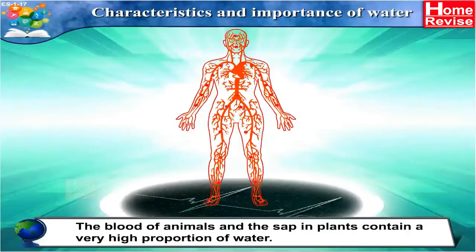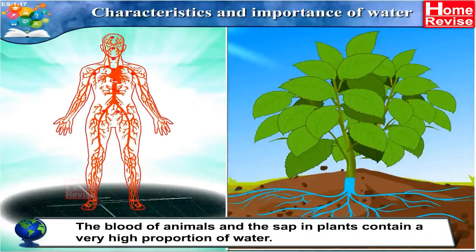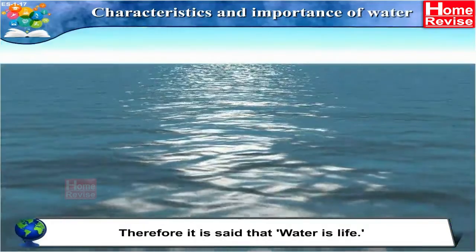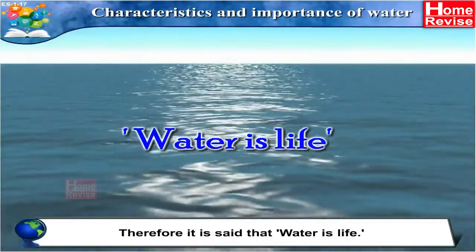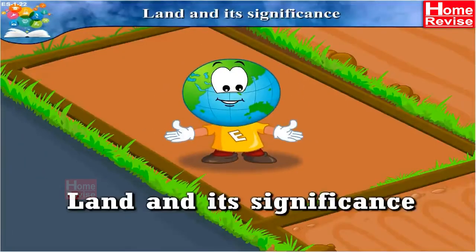The blood of animals and the sap in plants contain a very high proportion of water. No living thing can survive without water; therefore, it is said that water is life. Land and its significance. Students, we shall now study about the land and its importance.